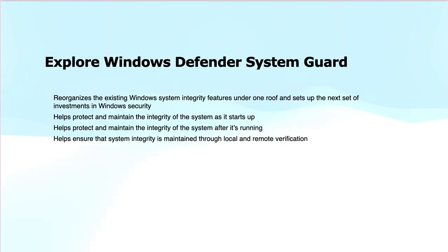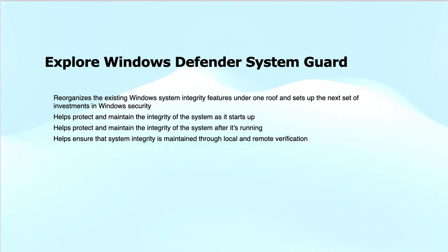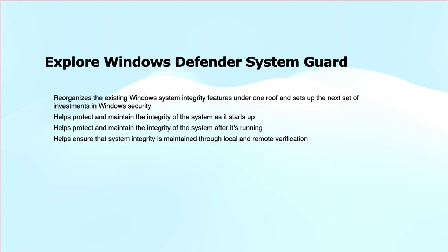Next is Windows Defender System Guard. This is a set of security features in Windows designed to protect the integrity of the operating system and prevent attacks that target the boot process or the kernel. It safeguards against low-level persistent threats such as tampering with system components or bypassing security protections. Key features include system integrity protection — System Guard ensures that the Windows kernel and critical system files remain secure from tampering — and protection against rootkits and bootkits by ensuring the system boots only with trusted software.